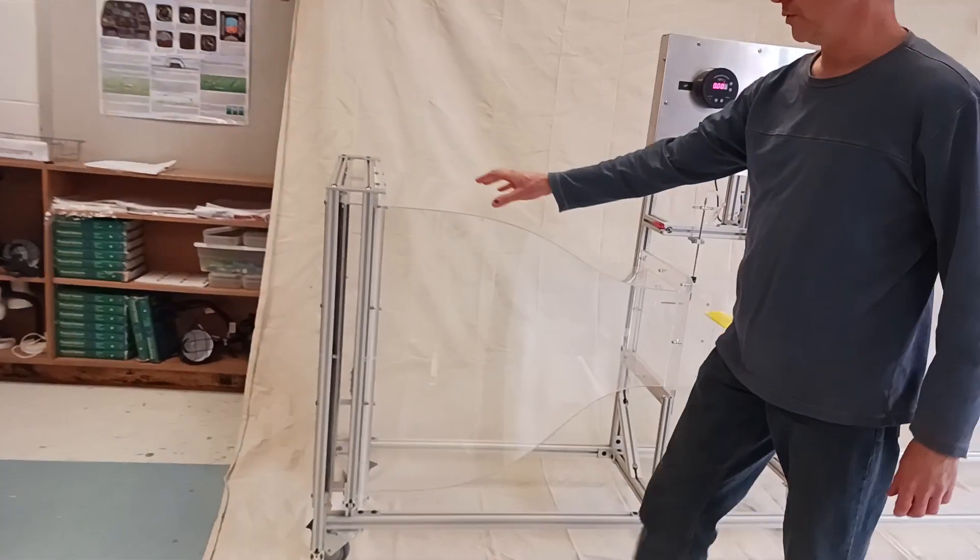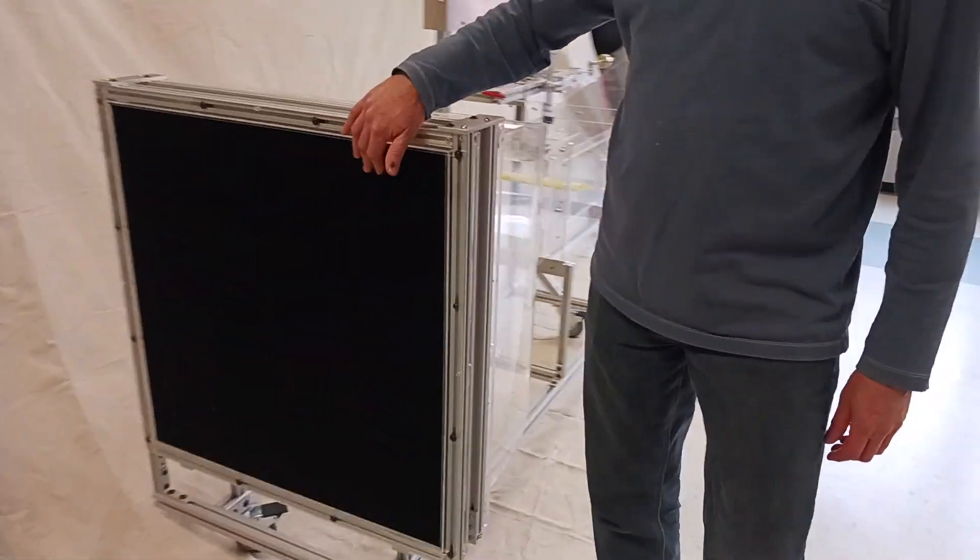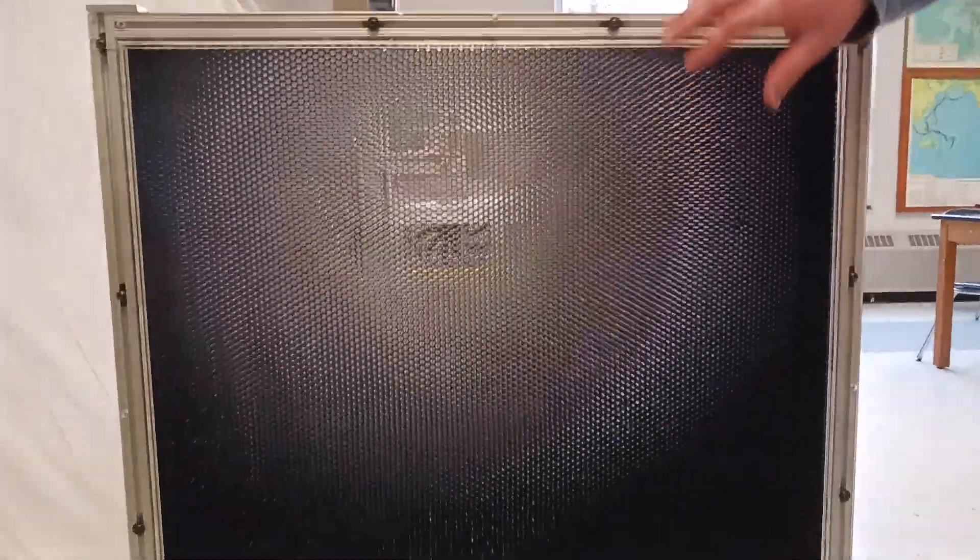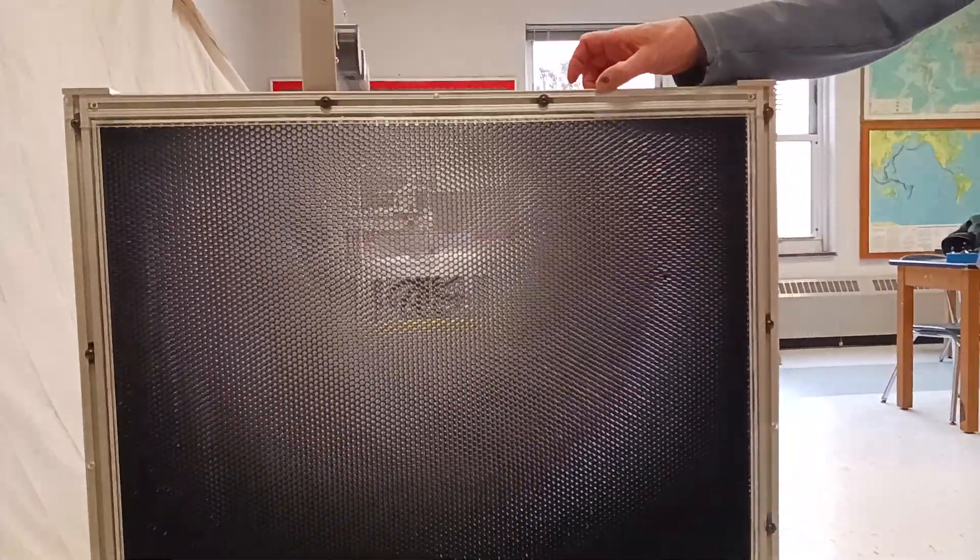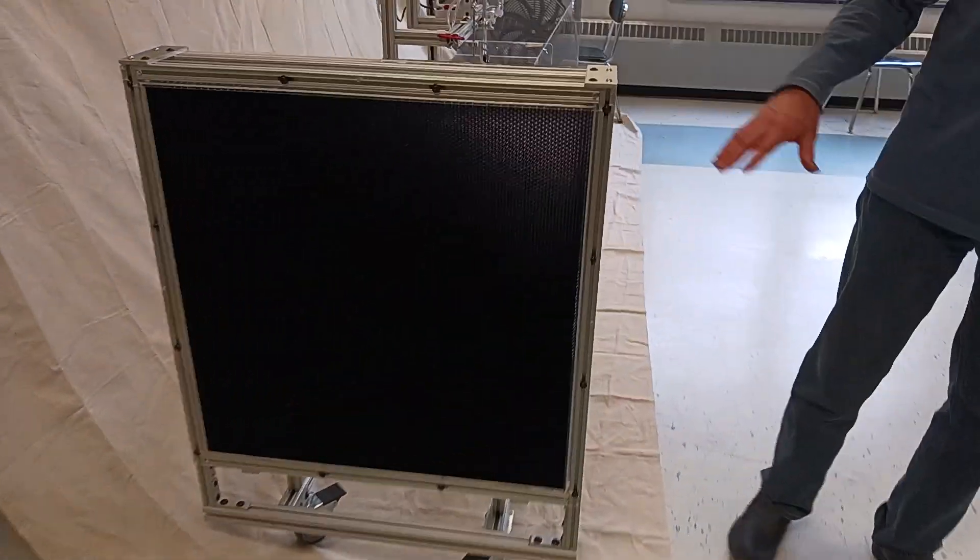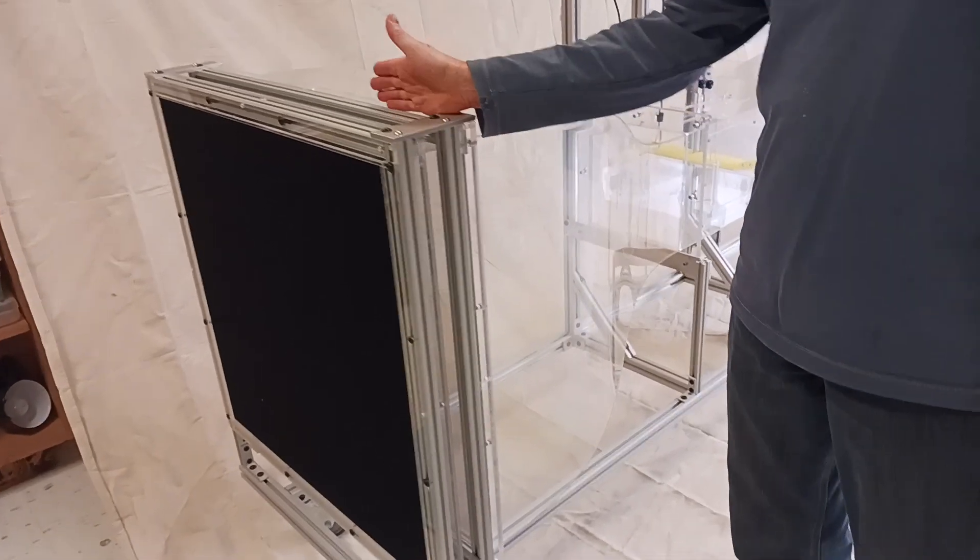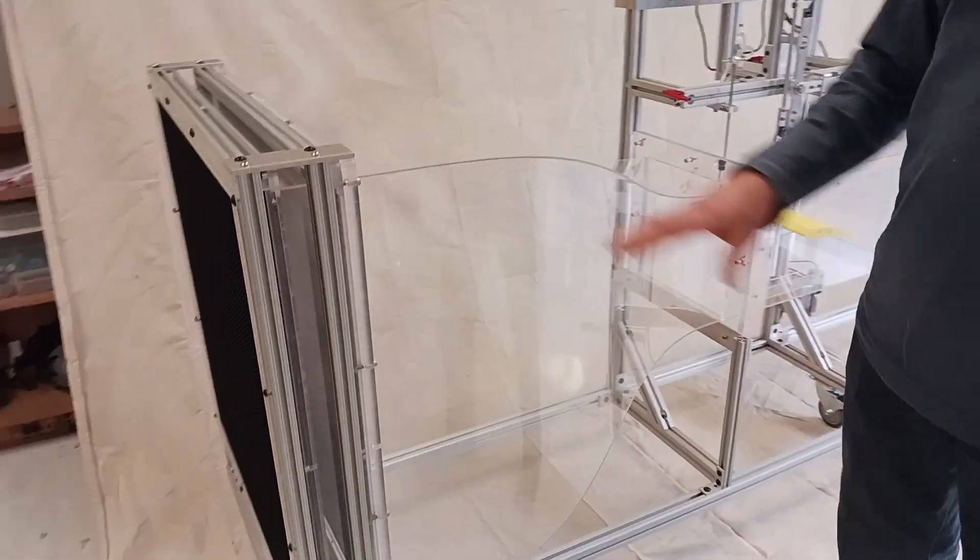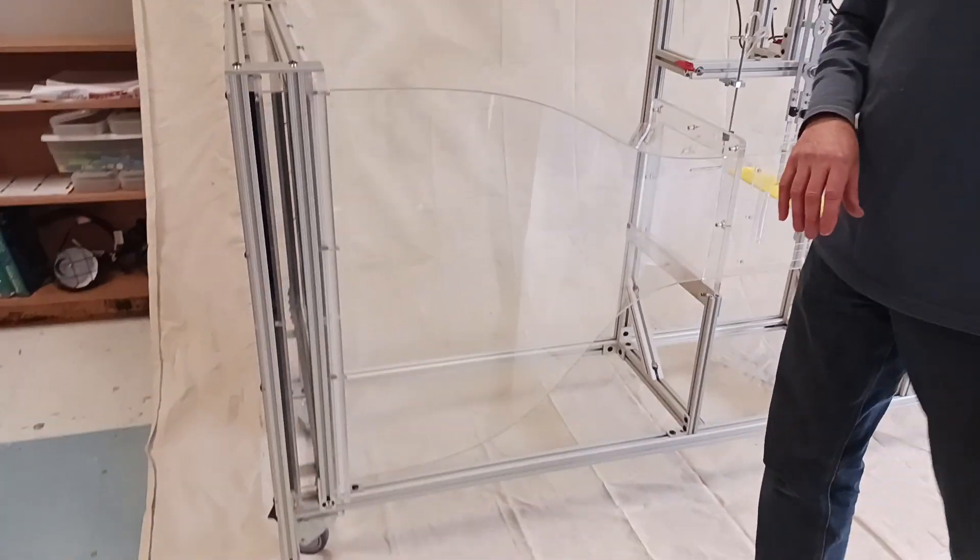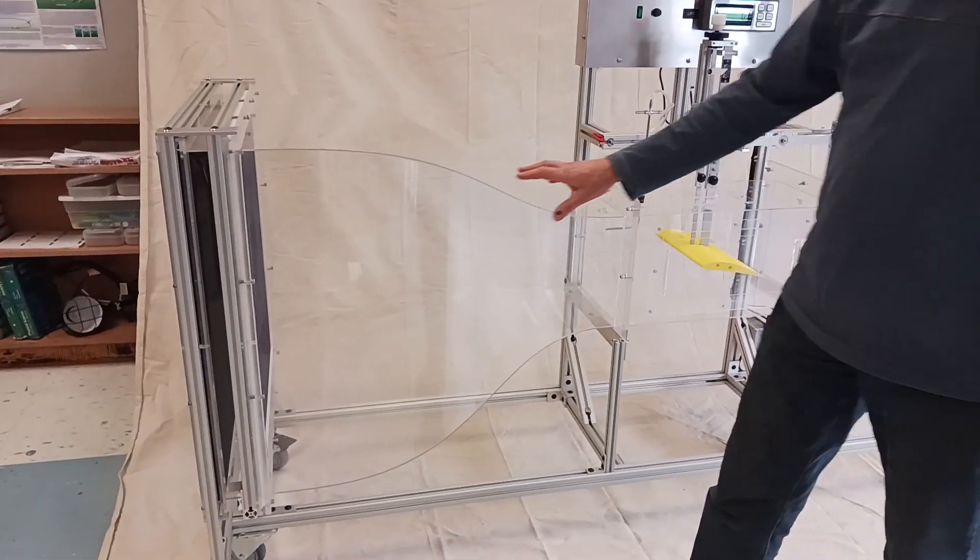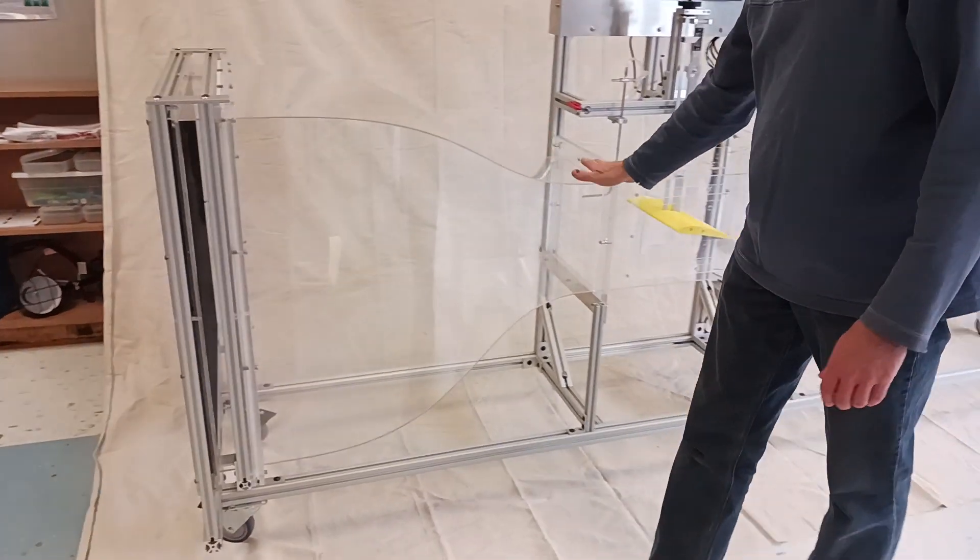So this is the inlet cone right here. The inlet cone starts with a honeycomb material. This honeycomb material is one and a half inches deep, and it's 30 by 30 inches wide. Then it's followed three inches downstream by a windscreen, standard windscreen from your local hardware store. Then we have this shape, which I acquired from online. So this is a three-foot section that's the inlet cone.